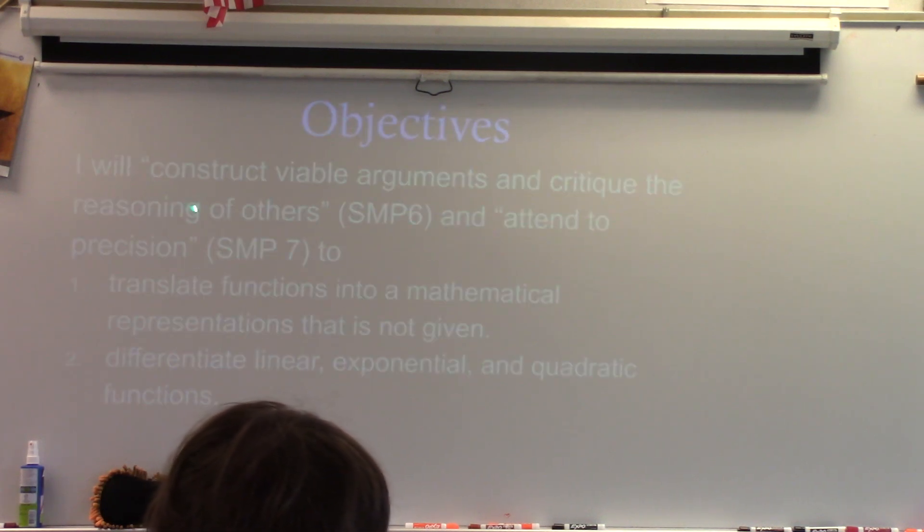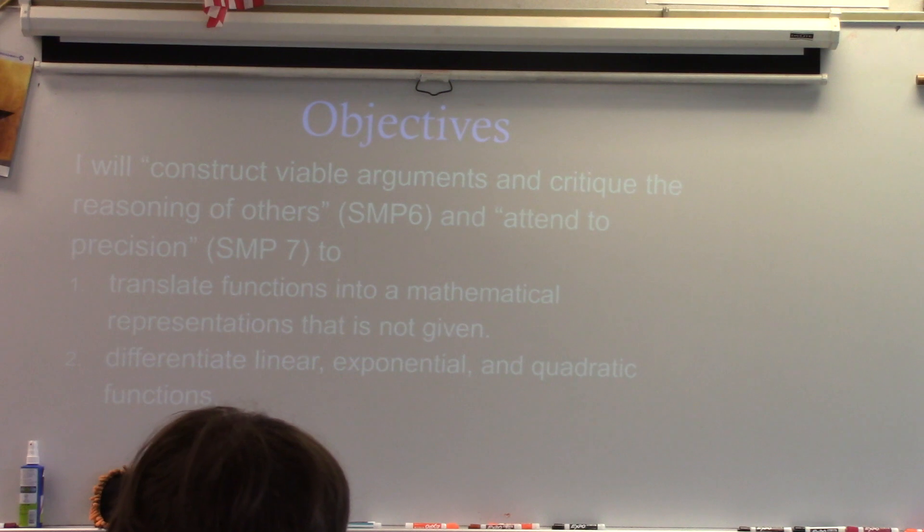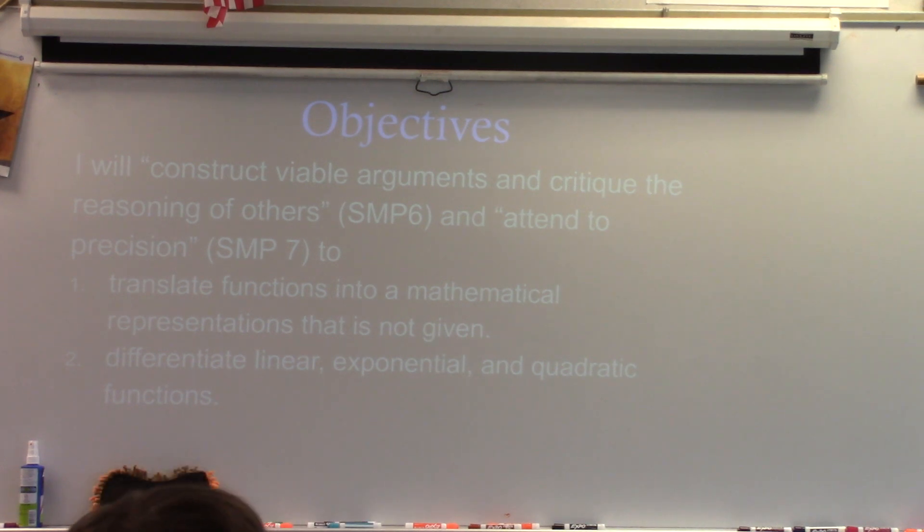So don't forget we want to construct viable arguments and critique the reasoning of others, and we've been talking about this pretty heavily. In order to have a valid argument or viable argument, what two things do you need? Justification. Justification for whatever you are claiming, right? You need a claim, you need a position statement, and then you need to justify that position statement with some evidence. Pay attention to others' arguments and critique their reasoning. That's how we practice translating functions into mathematical representations that are not given, and differentiate linear, exponential, and quadratic functions.